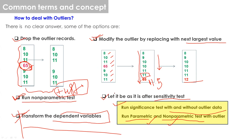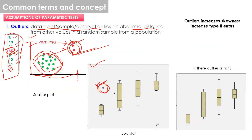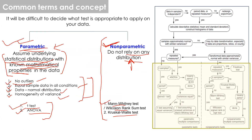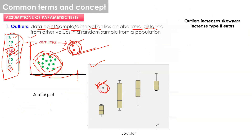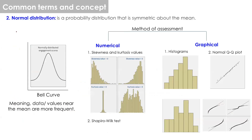The second assumption is equal sample size across conditions. If Group A has five data points, Group B should also have five. Unequal sample sizes affect the F-statistic and t-statistic used in parametric tests, increasing the risk of Type 1 or Type 2 errors. If you have unequal sample sizes, it is better to use a non-parametric test.